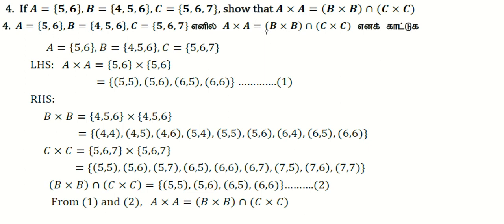Let's prove A×A = (B×B) ∩ (C×C). Starting with the left side, A×A where A = {5,6}. The cross product gives us: (5,5), (5,6), (6,5), (6,6). This is equation 1.